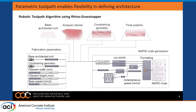To define where the robot moves, we need tool pathing. We're using an algorithm developed in Rhino-Grasshopper that takes input parameters — filament size and dimensions — and converts a base architected unit into an infill that is followed as a final polyline for a constraining geometry, which for us is a beam. That is then converted into a code of XYZ coordinates that the robot follows.